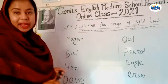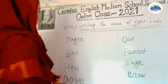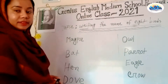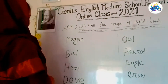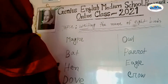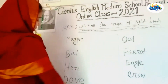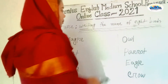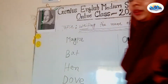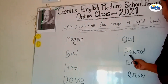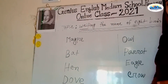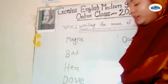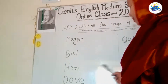Number one: magpie. Number two: bat. Number three: hen. Number four: dove. Number five: owl. Number six: parrot. Number seven: eagle. Number eight: crow.